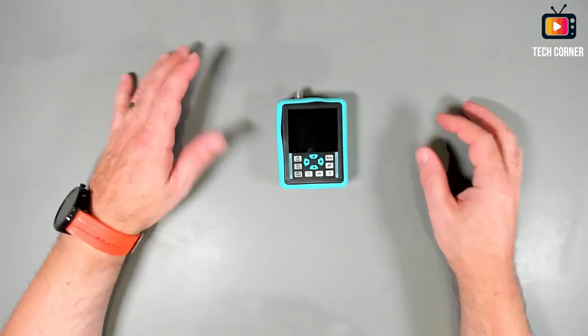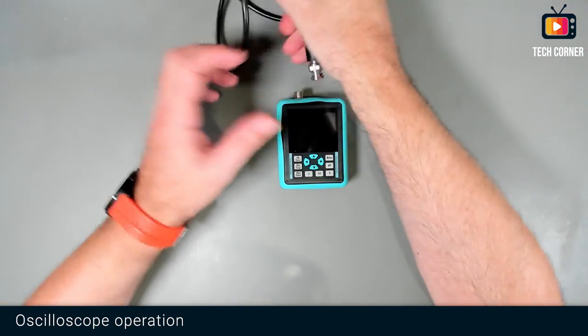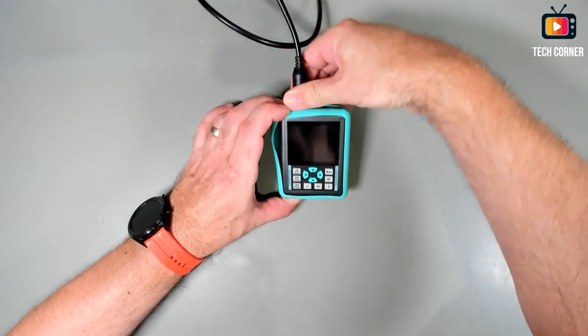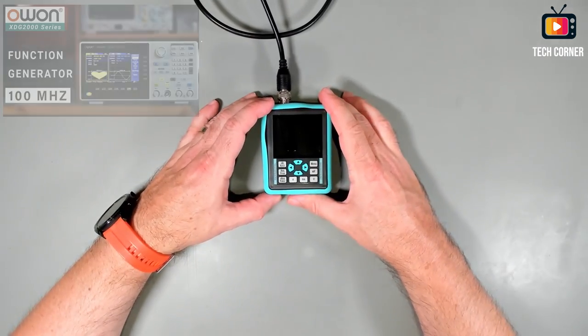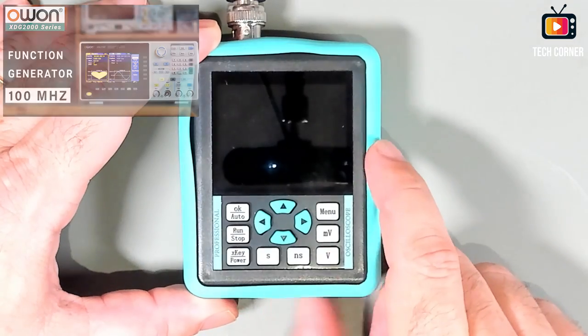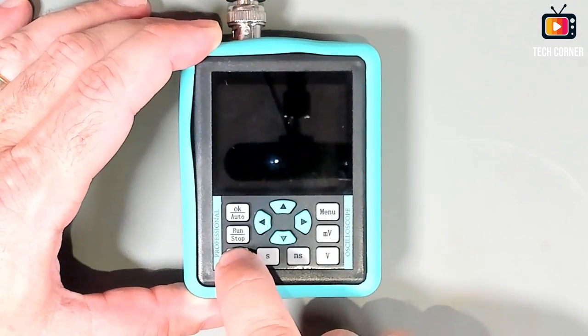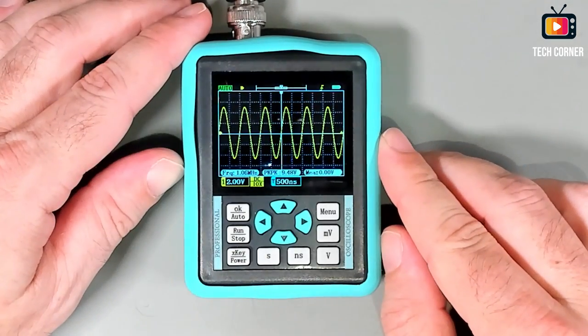The keyboard is very compact. It has less keys than the other models that I reviewed before. Some of these keys have double functions and I'm quite curious to see how this works. Let's start by connecting my XDG2100 function generator. To power it up you don't have a mechanical button, it's a soft button. Press for a while and it doesn't take much to start working.